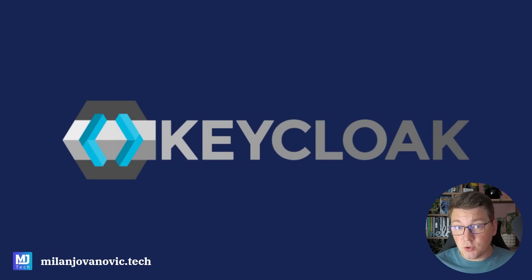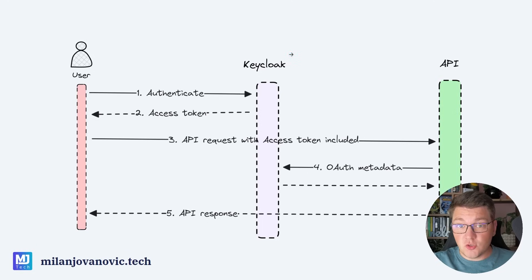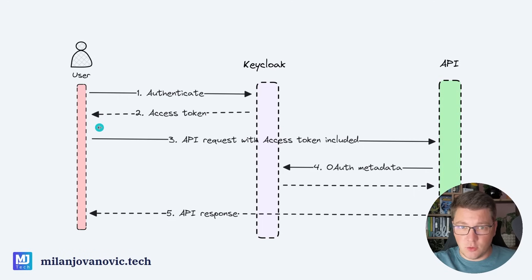Another alternative to consider is ASP.NET Core Identity, but it's not as robust as all the features KeyCloak offers. There is also the Duende Identity Server which requires a license, whereas KeyCloak has a free offering. You can also use KeyCloak in a microservices environment as the identity provider, where a user will first authenticate with KeyCloak — typically using the authorization code flow.